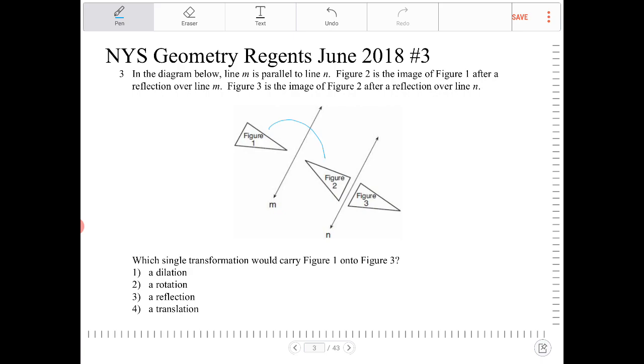So there's a reflection, we're going from 1 to 2. Figure 3 is the image of Figure 2 after a reflection over line N.